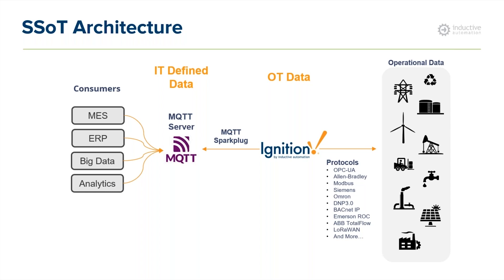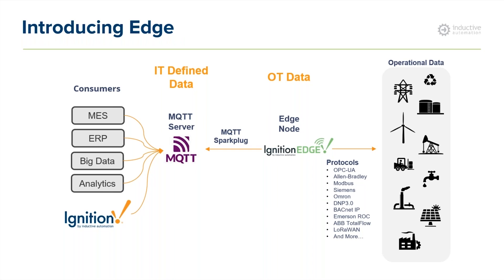When you have remote assets or critical machines on the plant floor where you need local HMIs or distributed systems, that's where Ignition Edge becomes an important part of the architecture. You can leverage Ignition Edge near those PLCs and edge devices, connect to that data, pull it at faster rates, and publish that data securely and by exception to the MQTT server. From there it's made available to a centralized Ignition SCADA system or any other application. By doing this, we're taking the brownfield world and bringing it into a modern infrastructure.